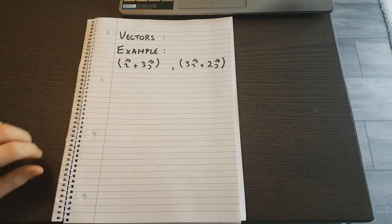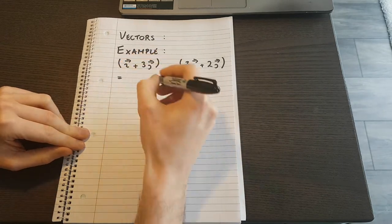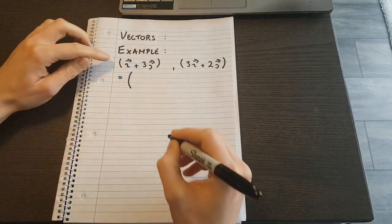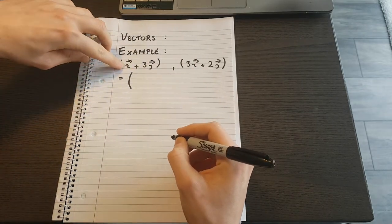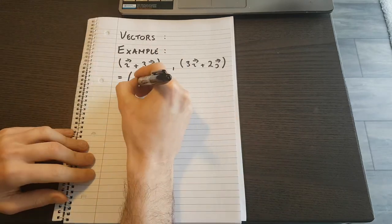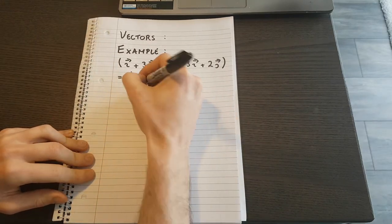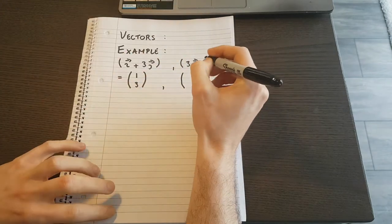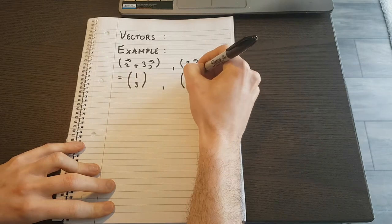And as we said, we can bring these into the column notation. This would be 1i, which means I put a 1 here, and this is 3j, which means I put a 3 here. And this is 3i plus 2j, so 3 here and 2 here.